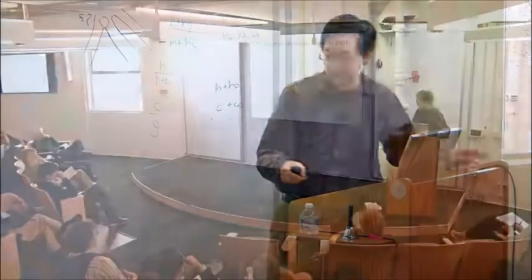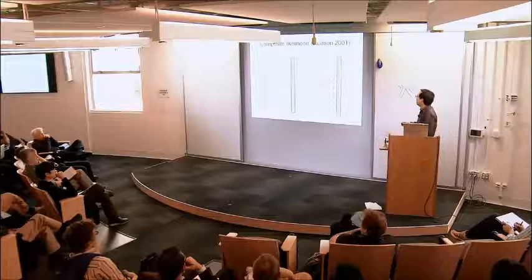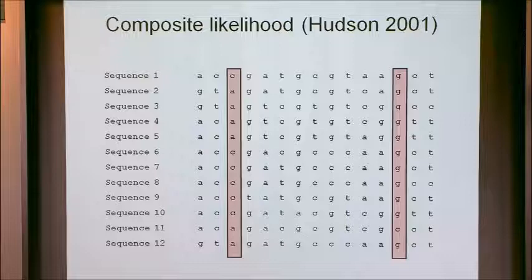Hudson's approach was to assume the recombination rate is constant across base pairs. You need exact locations because you're estimating a rate per base pair. Each pair of sites has a different distance, so if you're estimating your rate per base pair, it corresponds to a different genetic distance between each pair of sites.